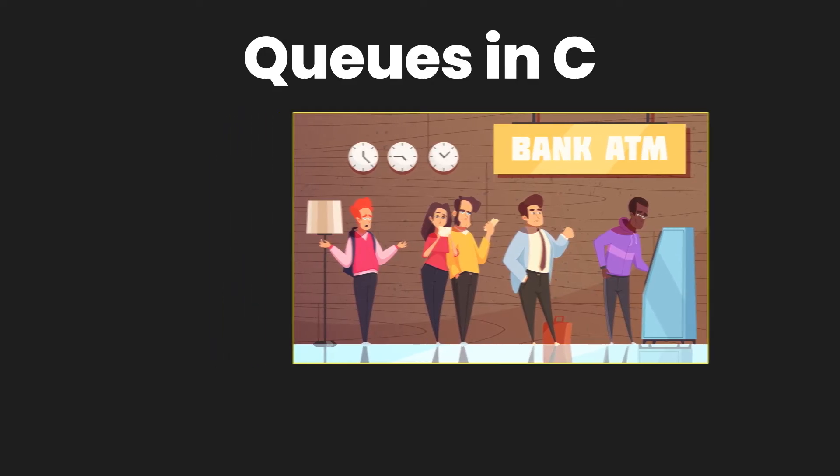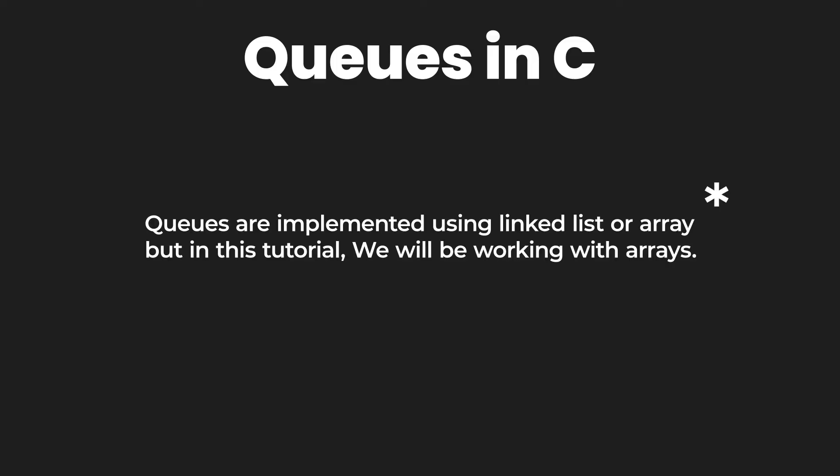So how are queues implemented in the C programming language? Queues are implemented using linked lists or arrays, but in this tutorial we are going to simply focus on implementing queues using arrays.